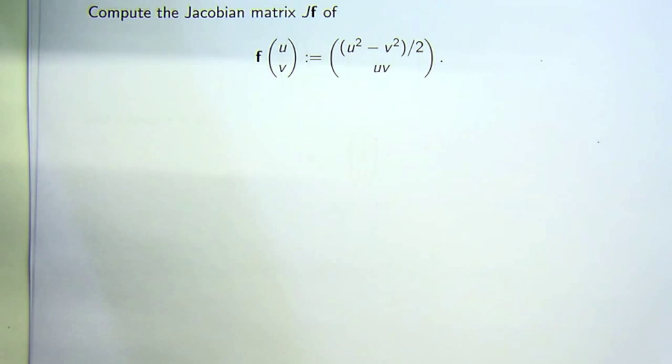You can also think of the Jacobian matrix as a derivative, an extension of the idea of a derivative, just like grad, curl, div are all kinds of derivatives.